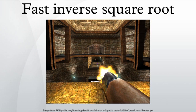As a worked example, consider the number x equals 0.15625, for which we want to calculate 1 divided by the square root of x, which equals approximately 2.52982.